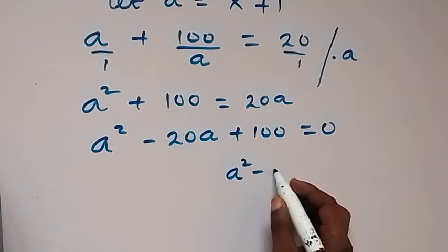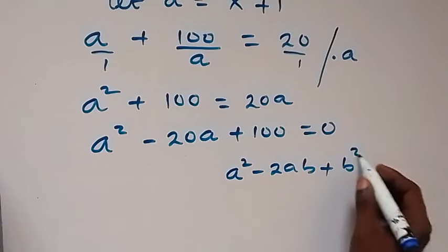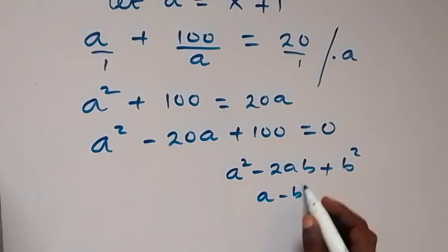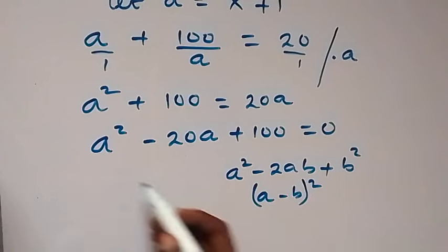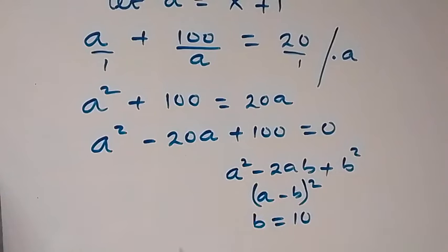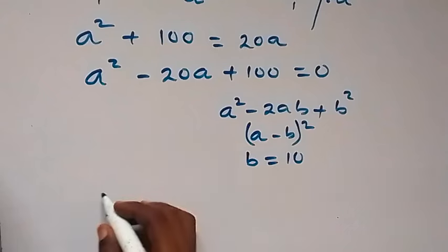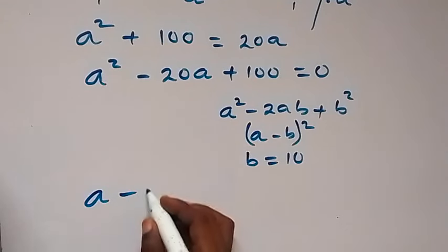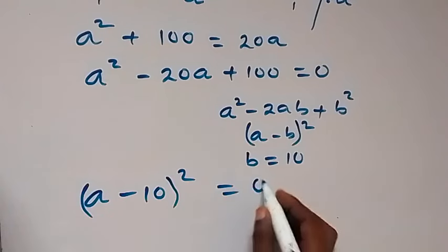From here we use the identity: a squared minus 2ab plus b squared equals (a minus b) squared. We can see that in this case b equals 10, so the equation becomes (a minus 10) squared equals 0.